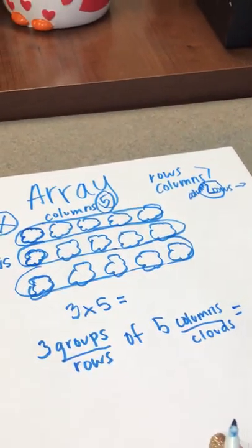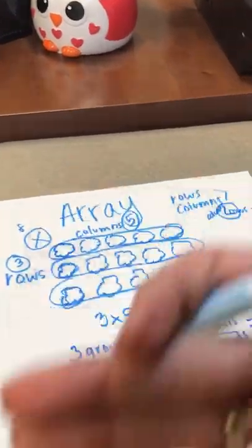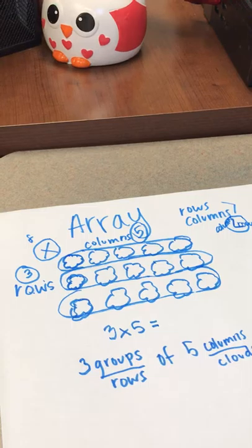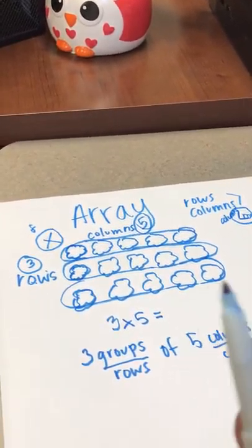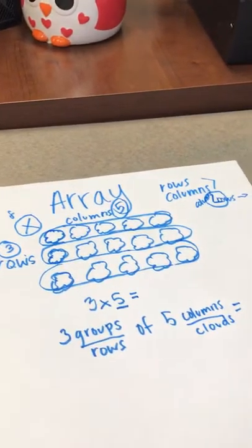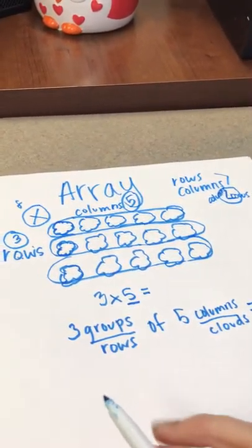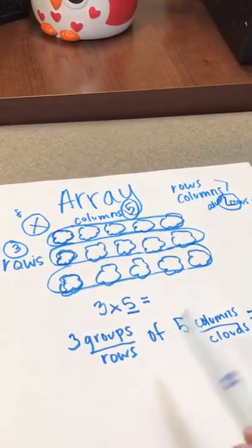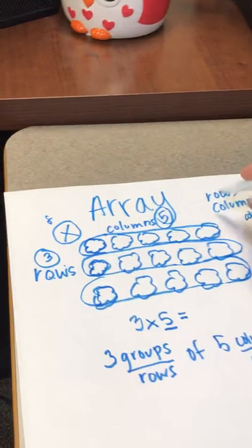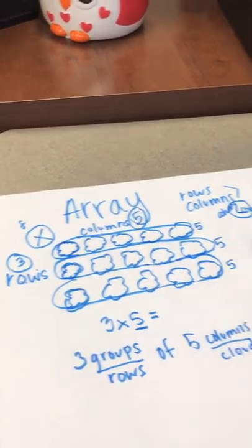And then this is where obviously we would want multiplication facts to start coming into place. But I'll back up just a second. We've been learning that any multiplication with a five in it is super easy because you can skip count by fives. But I also allow them to use repeated addition on the array strategy. So if I have five clouds, five clouds, and five clouds...